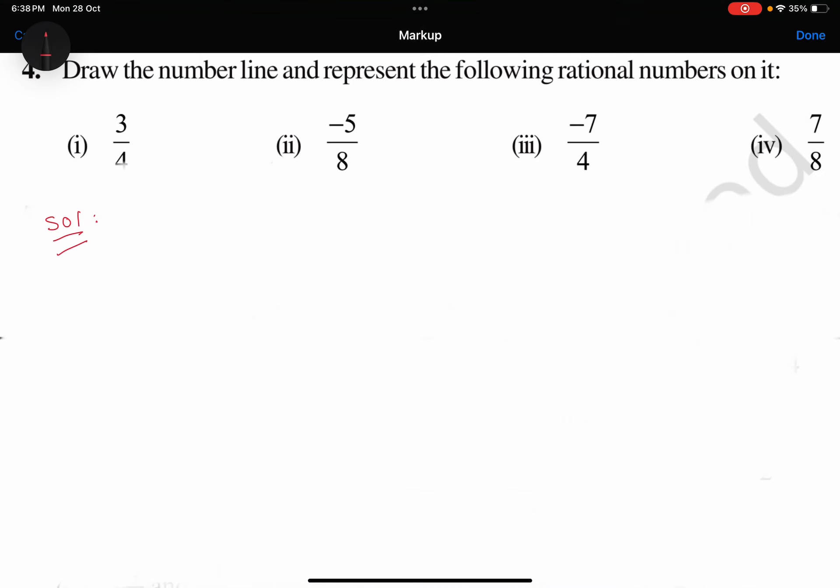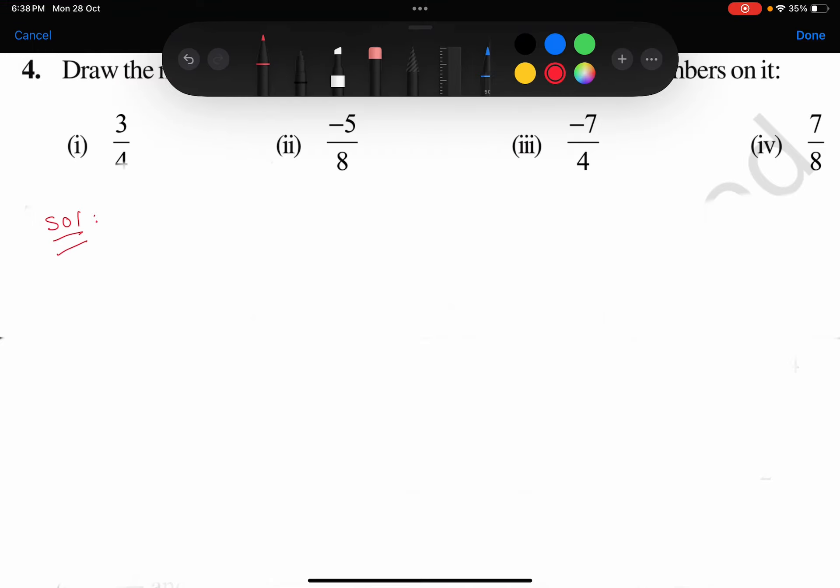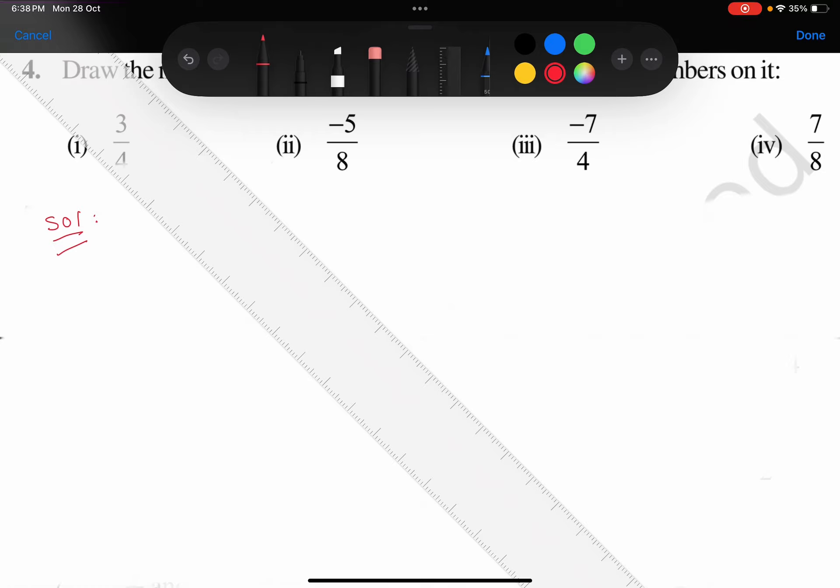Hello everyone, this is Class 7 CRT textbook, Chapter 8 Rational Numbers, and we are doing Exercise 8.1, fourth sum. Draw the number line and represent the following rational numbers on it. First step is to draw a number line.